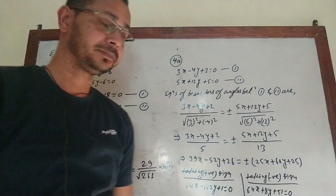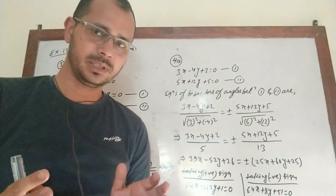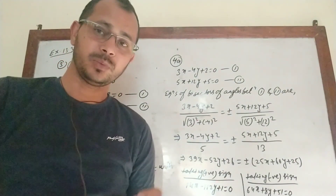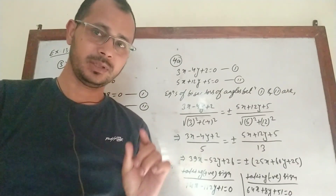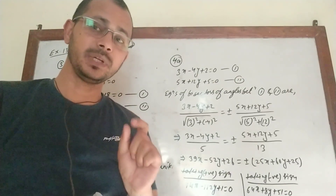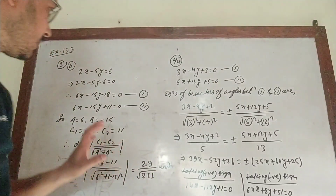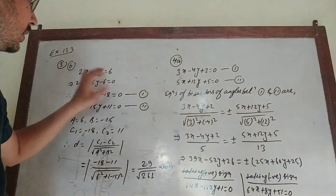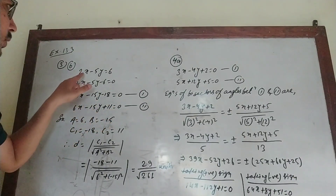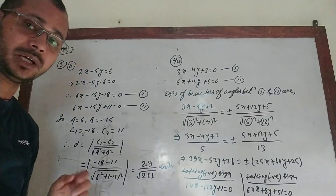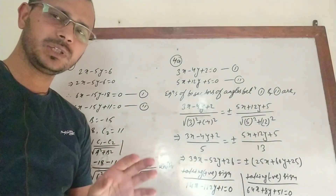Question number 3b: determine the distance between two parallel lines. Before applying the formula c1 − c2 / √(a² + b²), the a and b coefficients in both equations must be the same. If they differ, we make them equal before proceeding. The two lines given are: 2x − 5y = 6 and 6x − 15y + 11 = 0.